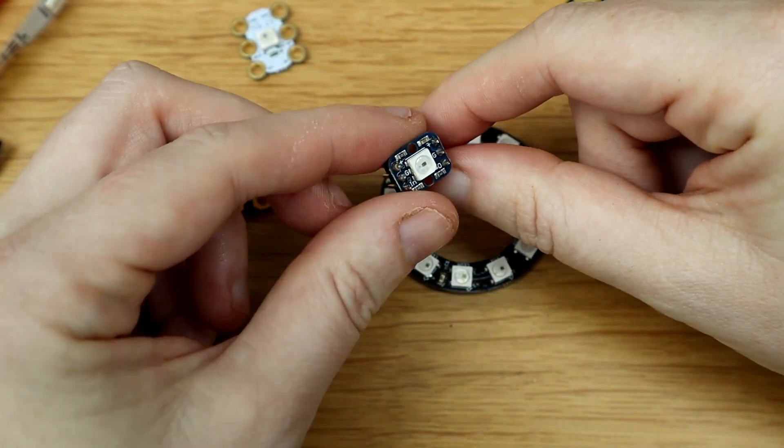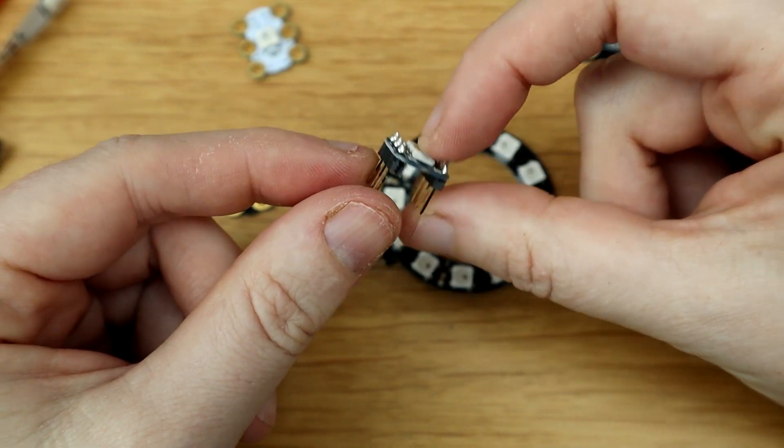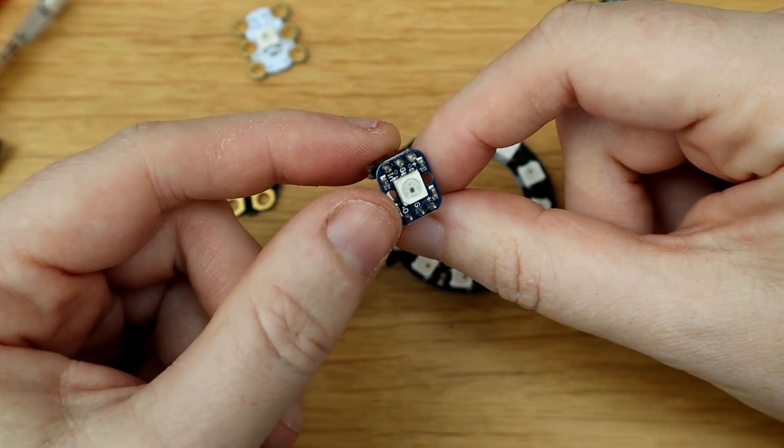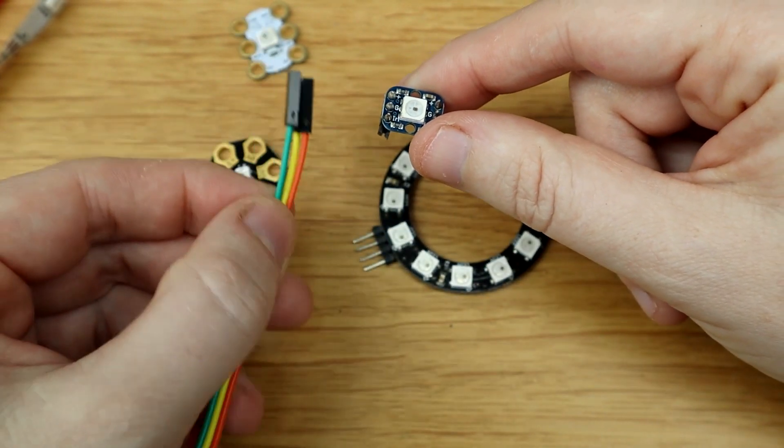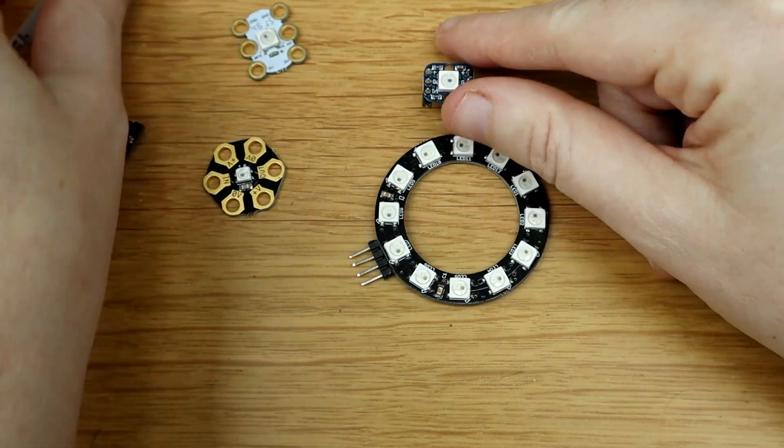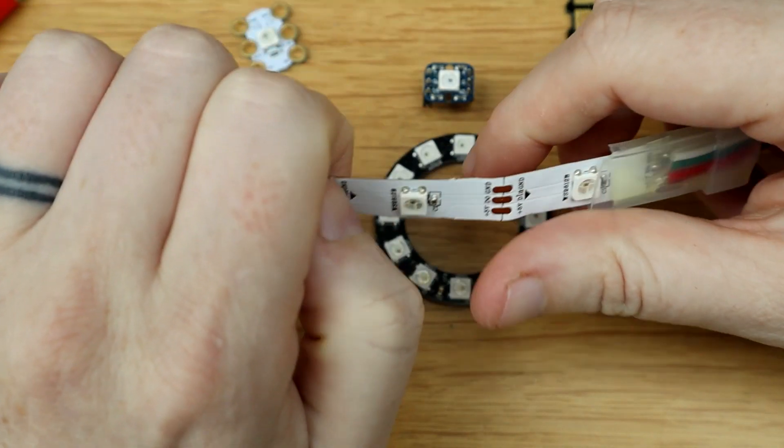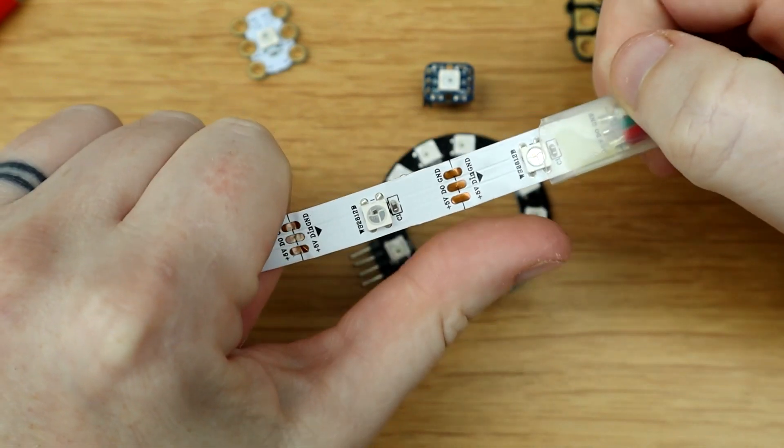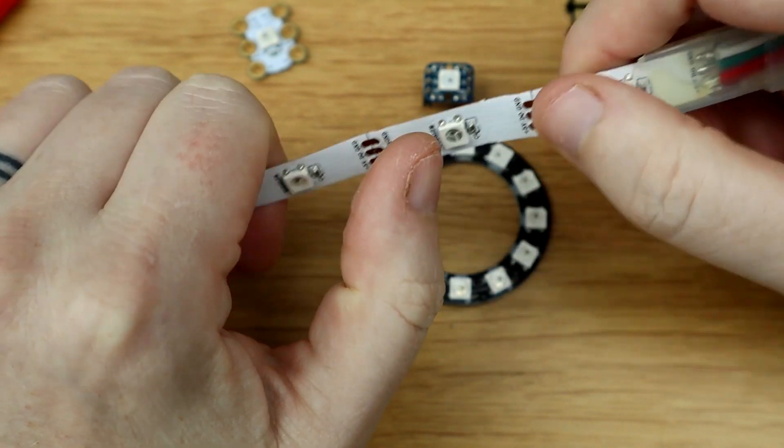And this is the Adafruit NeoPixel. So they come as a flat board and you solder on the pins yourself. And again, it's chainable. You've got data in, data out. You use your jumper wires to connect it to your data source.